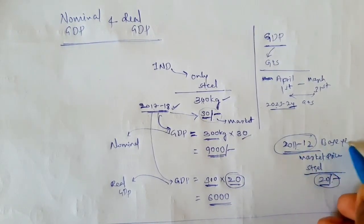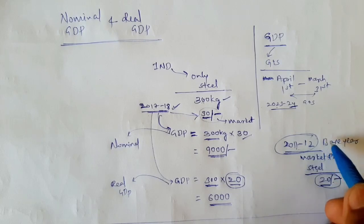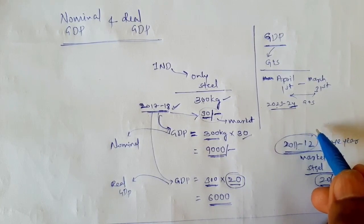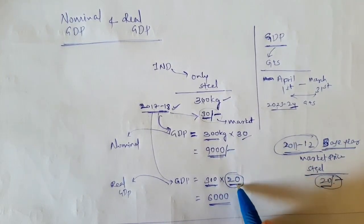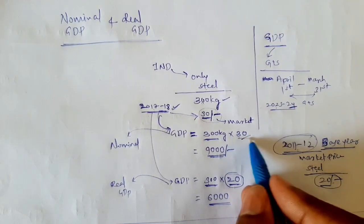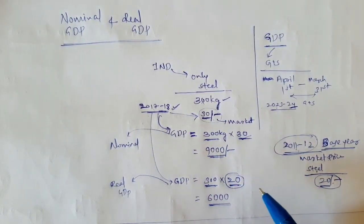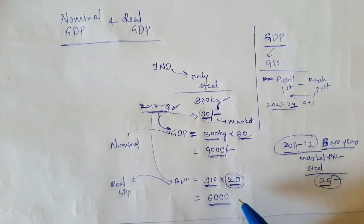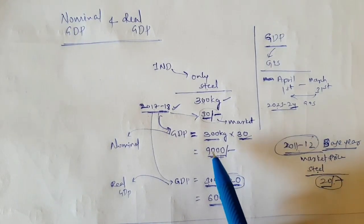Every time, the government changes the base year price. Last time it was about 2004-05. We use the base year price to calculate how much prices have risen — for example, from 20 rupees in 2011 to 31 rupees in 2017-18 — to know the inflation and how much prices have increased. That is why we use the base year price when calculating real GDP.